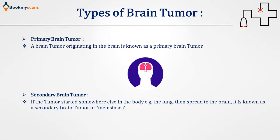Generally, brain tumours are of two types: primary brain tumour and secondary brain tumour. A brain tumour originating in the brain is known as a primary brain tumour. If the tumour started somewhere else in the body — for example, the lung — and then spread into the brain, it is known as a secondary brain tumour or metastasis.